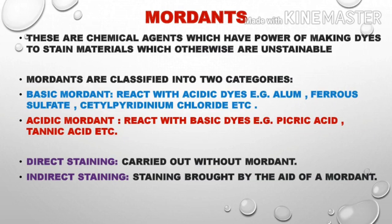Mordants are classified into two categories: basic mordants and acidic mordants. Basic mordants react with acidic dyes. Examples include alum, ferrous sulfate, and cetyl pyridinium chloride. Acidic mordants react with basic dyes. Examples include picric acid and tannic acid.